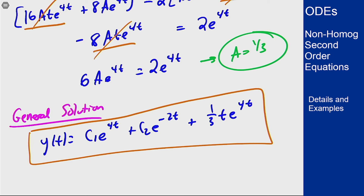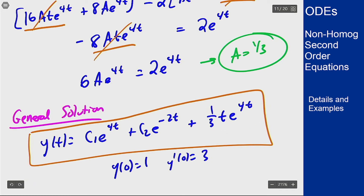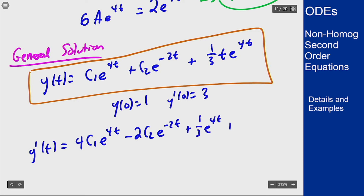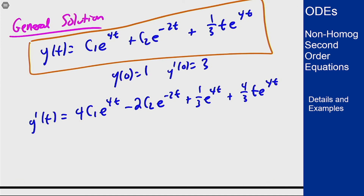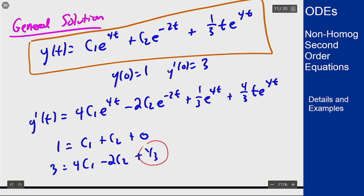Now we apply the initial conditions y(0) = 1 and y'(0) = 3. We must include the particular solution throughout this process — ignoring it would give a wrong answer. Computing y'(t) gives 4c1 e^(4t) minus 2c2 e^(-2t) plus (1/3) e^(4t) plus (4/3) t e^(4t). Plugging in t = 0: y(0) = 1 gives c1 + c2 = 1, and y'(0) = 3 gives 4c1 minus 2c2 plus 1/3 = 3.